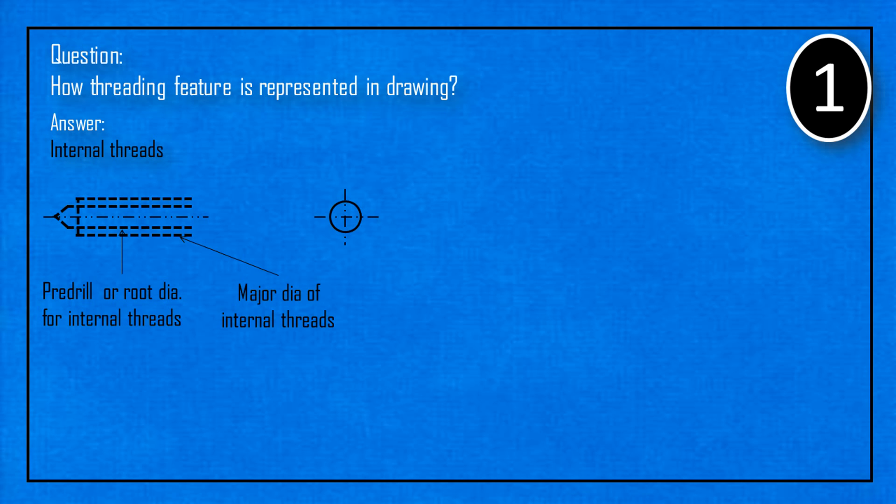In another view, a full circle will represent the drill diameter of thread. And a three-fourth circle represents the major diameter of internal threads.